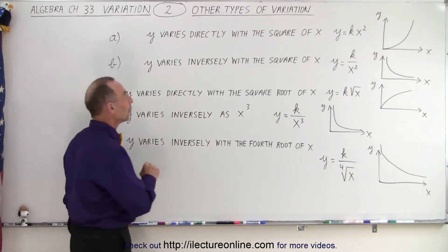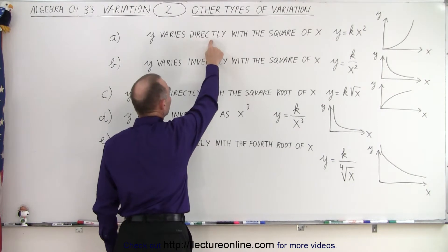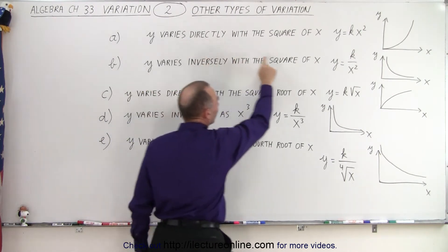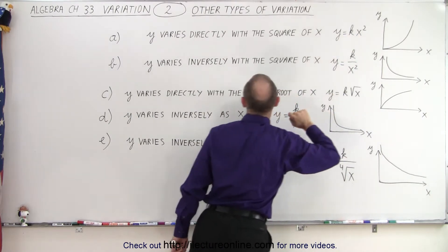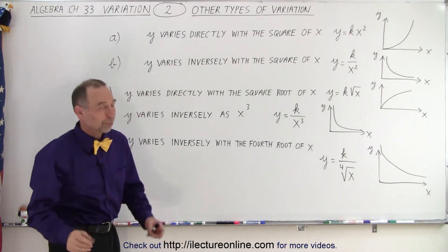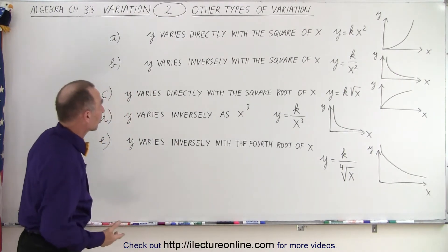The main difference is that we can either have a direct variation or an inverse variation. If it's direct variation, then the variable will be in the numerator. If it's inverse variation, then the variable will be in the denominator. Those are the two big differences.